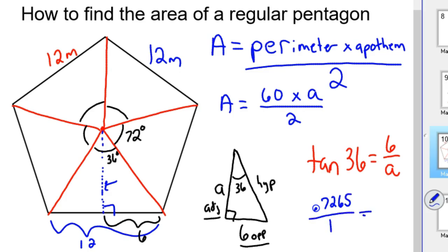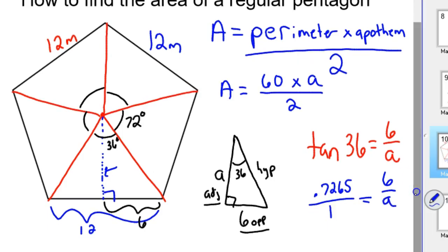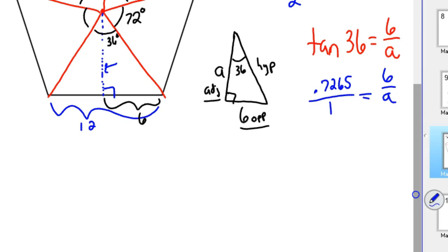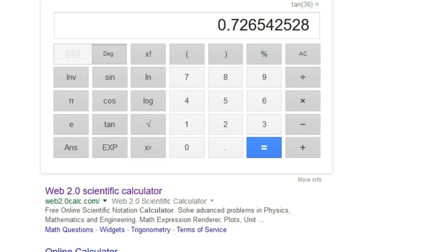And we'll put that over 1. That's in place of the tangent 36, equals 6 over A. And then we'll cross-multiply. And so if you cross-multiply, that'd be 0.7265 times A equals 6 times 1. And so we know A, or the apothem, is 6 divided by 0.7265. So back to our calculator. So 6 divided by your previous answer is 8.26. So there's our apothem.